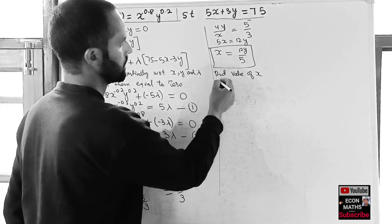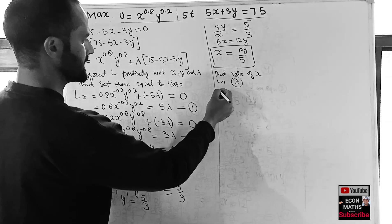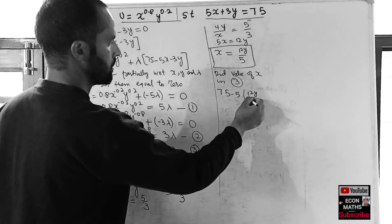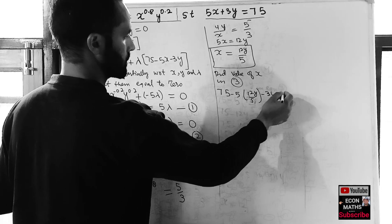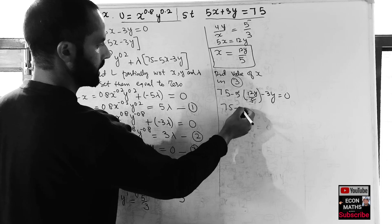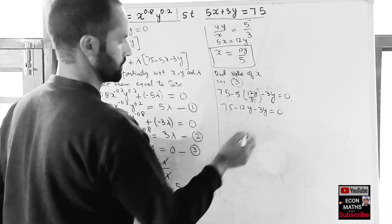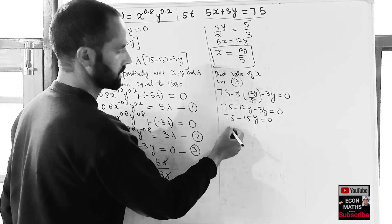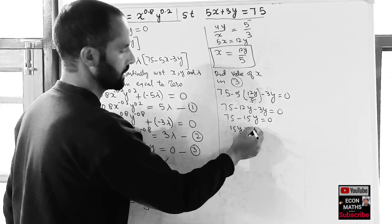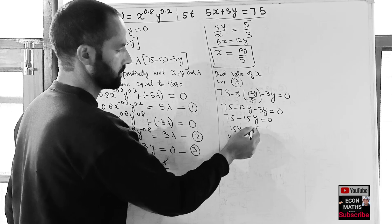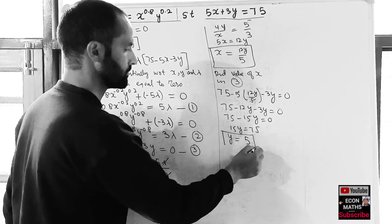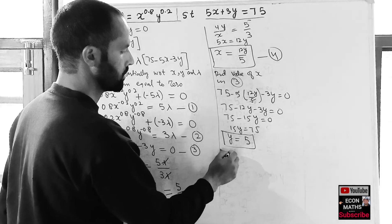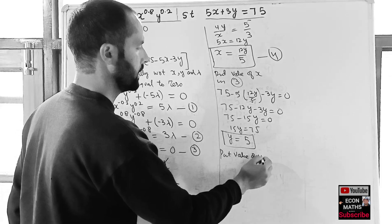Substituting x = 12y/5 into Equation 3: 75 - 5*(12y/5) - 3y = 0. The 5 cancels in the second term, giving 75 - 12y - 3y = 0, so 75 - 15y = 0, therefore 15y = 75 and y = 5. The value of y is 5.